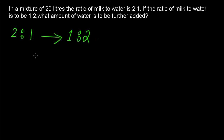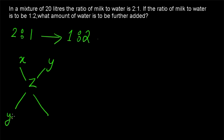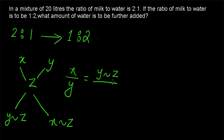Here we can apply the rule of allegation. The rule of allegation says that when x and y are combined together to form z, the proportion of x to y is given as the difference between y and z to the difference between x and z. This difference should be a positive quantity.